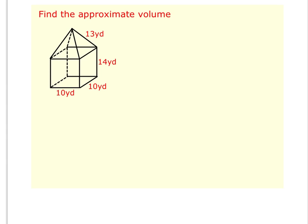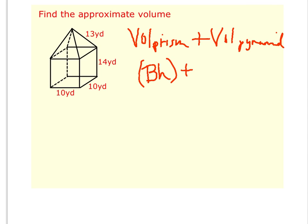This example has two three-dimensional shapes: a prism on the bottom and a pyramid on the top. So in order to find the volume of this shape, we're going to take the volume of the prism and add the volume of the pyramid. We'll start by writing down our volume formulas. Volume of a prism is area of base times the height. The volume of the pyramid is one-third times the area of the base times the height.